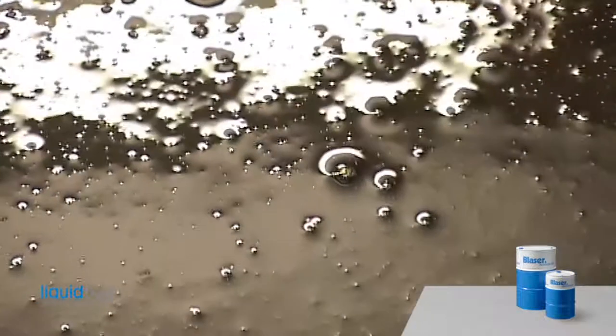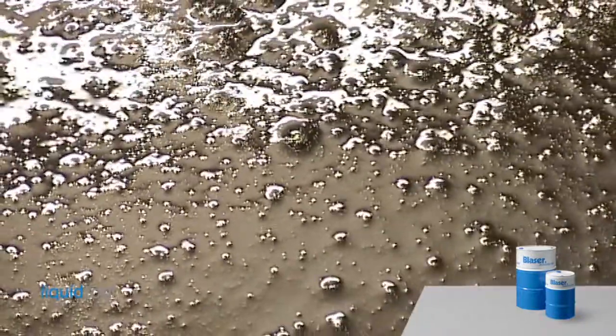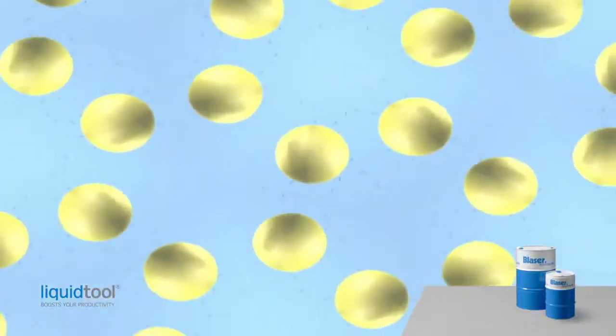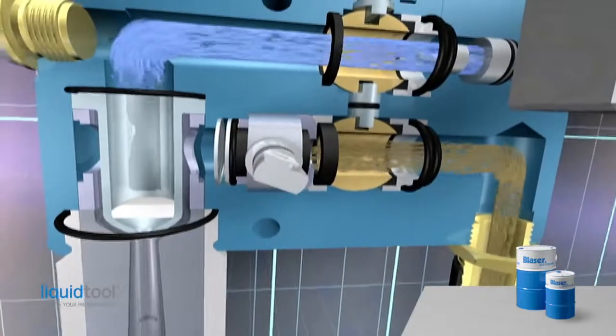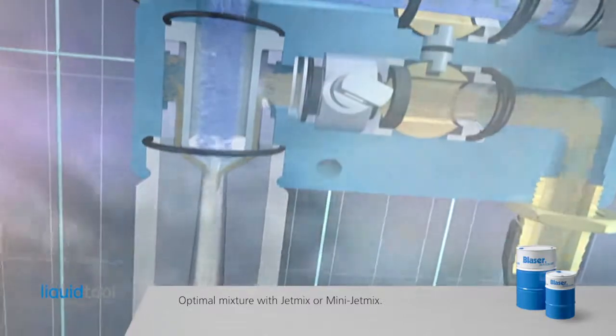The emulsifiers and oils in Blaser Swiss Loop cutting fluid concentrates are precisely balanced and ready for mixing with water. But uniform distribution in the water does not happen automatically. It depends on correctly mixing the concentrate with water.